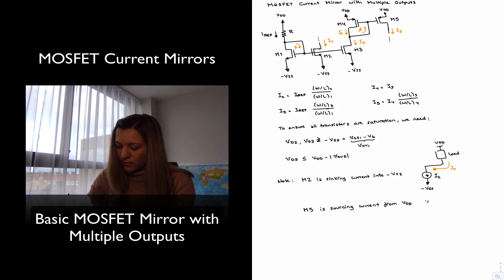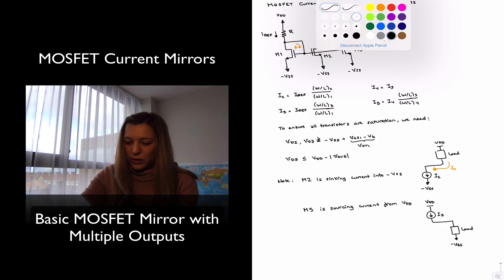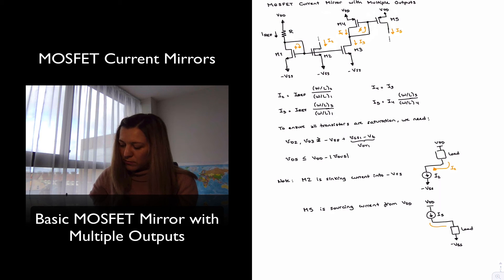So I will have my VDD, my current source I5, and then my load, which again could be connected to ground or could be connected to negative VSS. But in essence, I will be sourcing current I5. That's pretty standard terminology, so we want to be using it, sinking current, sourcing current.